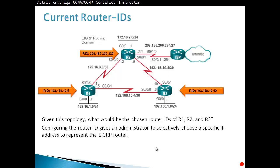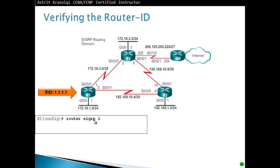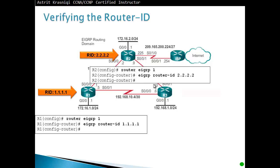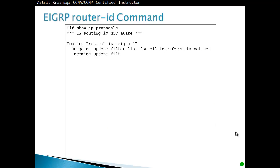Configuring the router ID gives the administrator the ability to select a specific IP address to represent the EIGRP router, rather than letting it pick automatically. For example, we configure Router 1 with 'eigrp router-id 1.1.1.1', Router 2 similarly, and Router 3 with 'eigrp router-id 3.3.3.3' from EIGRP configuration mode.